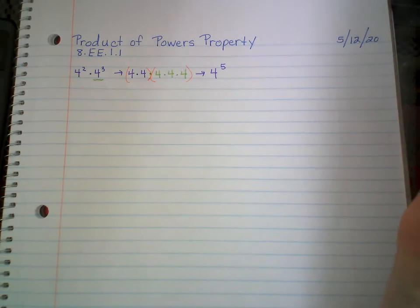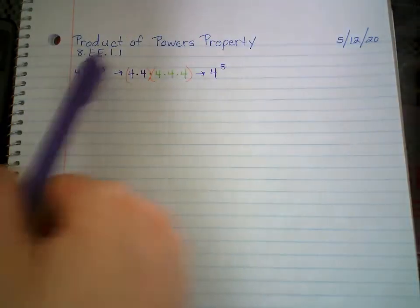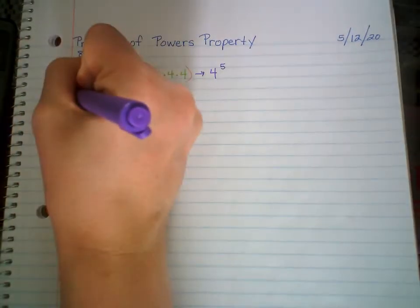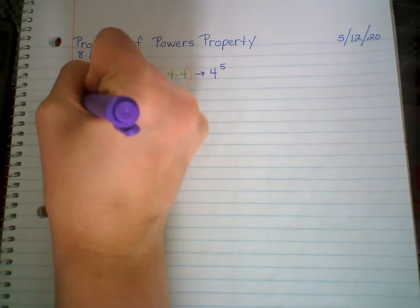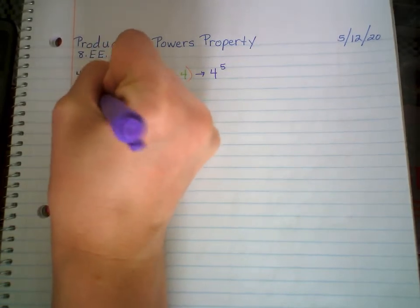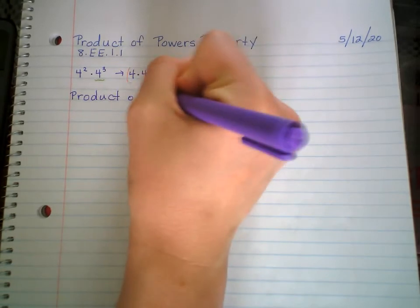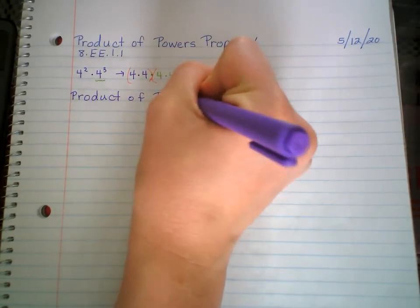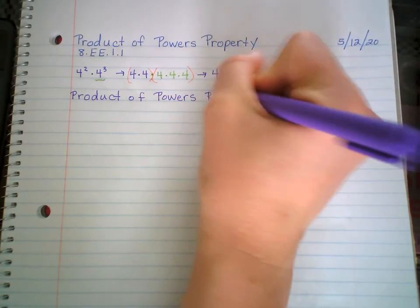So that's where this rule that we're about to learn comes in — it's the product of powers property or rule. Property means it's always true. So product of powers property, rule, whichever.